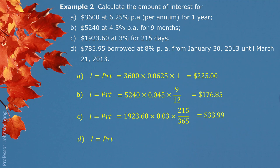Part D: $785.95 borrowed at 8% from January 30, 2013 until March 21, 2013. We need to figure out the time period between January 30 and March 21, which gives us 50 days in between. We put in $785.95, multiply by 0.08, multiply by 50, divide by 365, giving us $8.61. In Excel, if you enter dates directly into cells, you can simply subtract one cell from the other to get the number of days in between — very convenient.